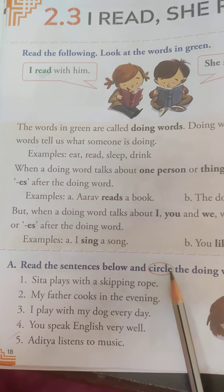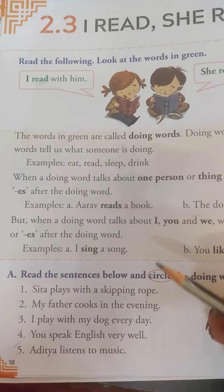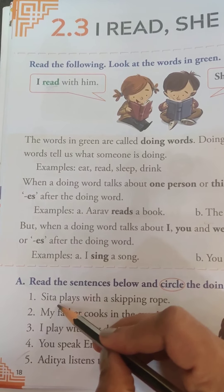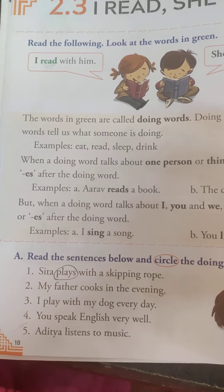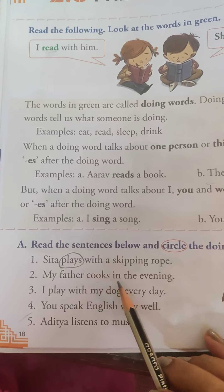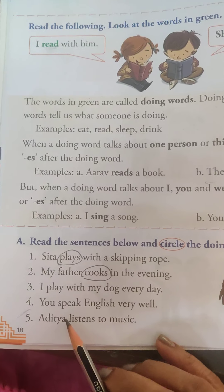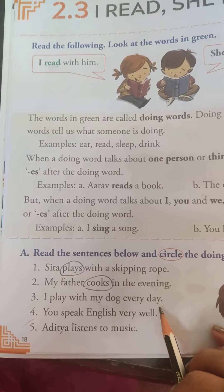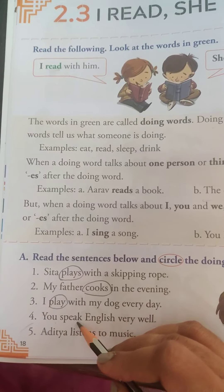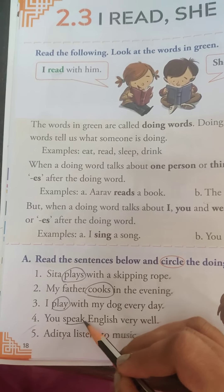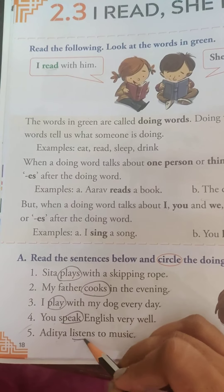Read the sentences below and circle the doing words. Sita plays with a skipping rope. What is Sita doing? Sita plays. My father cooks in the evening — he is cooking, that's an action. I play with my dog every day. I play. You speak — you are speaking, that's an action. Aditya listens — what is Aditya doing? Aditya listens.